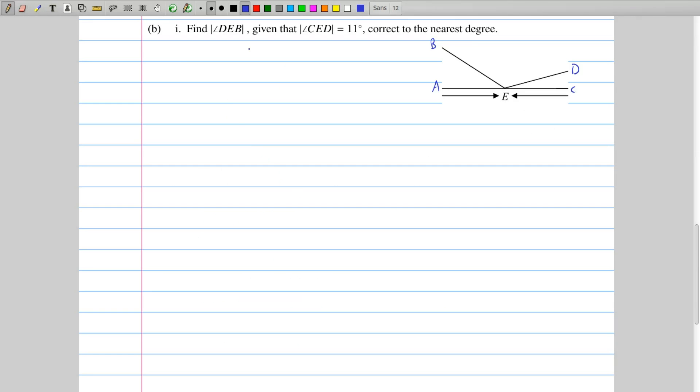The first question in part B asks us to find this angle DEB. Given that the angle CED is 11 degrees, so this angle here is 11 degrees, and we already worked out in the previous question that AEB was 31 degrees, we have to find this missing angle.